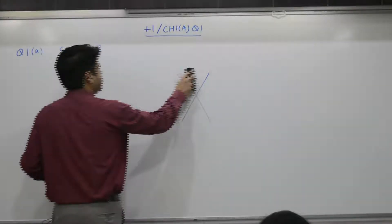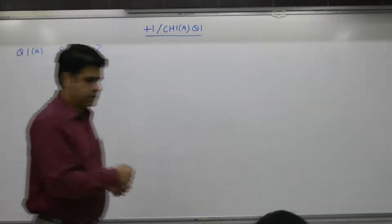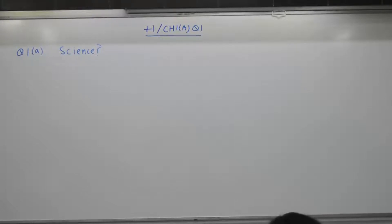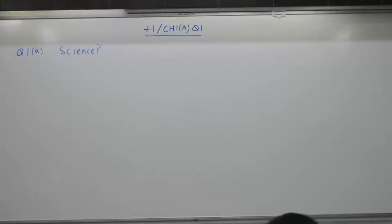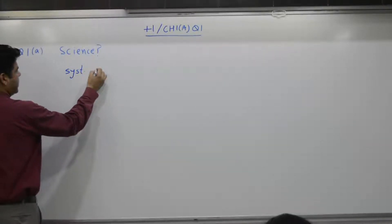Question: what is science? Science is a systematic attempt. When you say systematic, it means organized. If you are organized, you are disciplined, you are doing all things as per plan — you are a science student. Science is a systematic attempt to understand natural phenomena. The first part in the definition of science is systematic attempt.